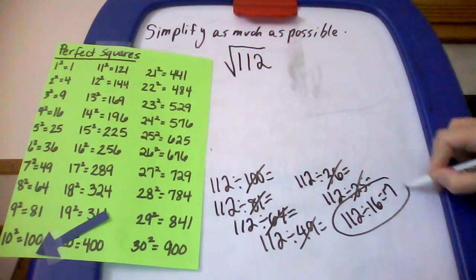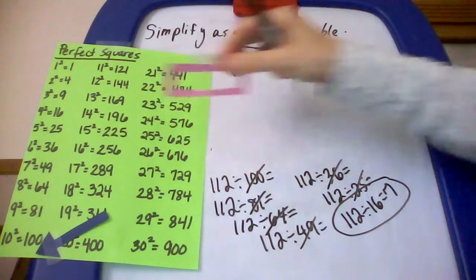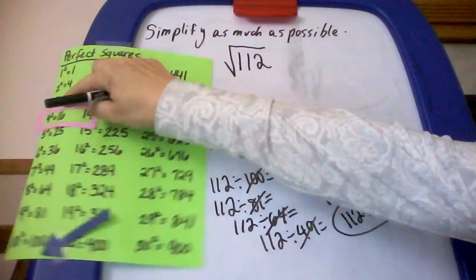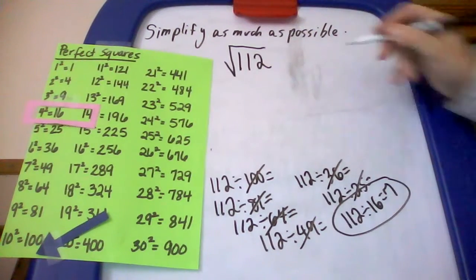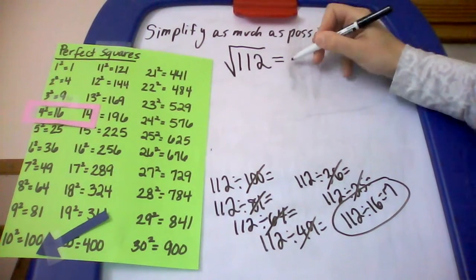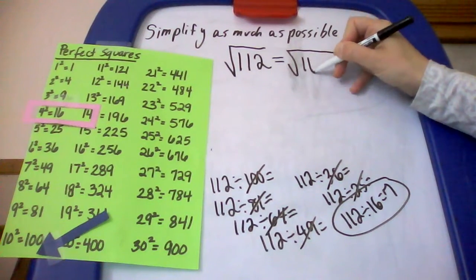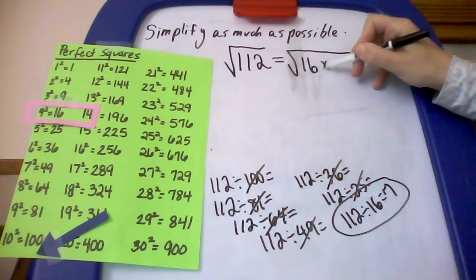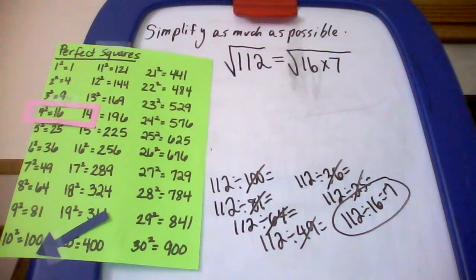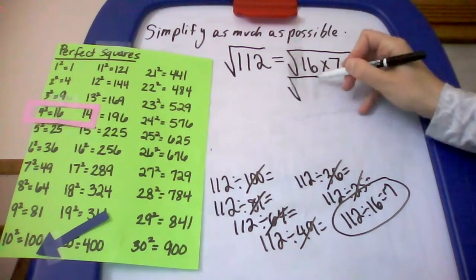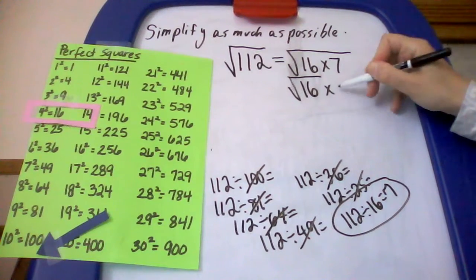Therefore, I'm going to use 16. I'll put a little marker over here. So I'm going to factor 112 as 16 times 7. Now I'm going to use my product property for square roots, and we're going to write this as two square roots. The square root of 16 times the square root of 7.